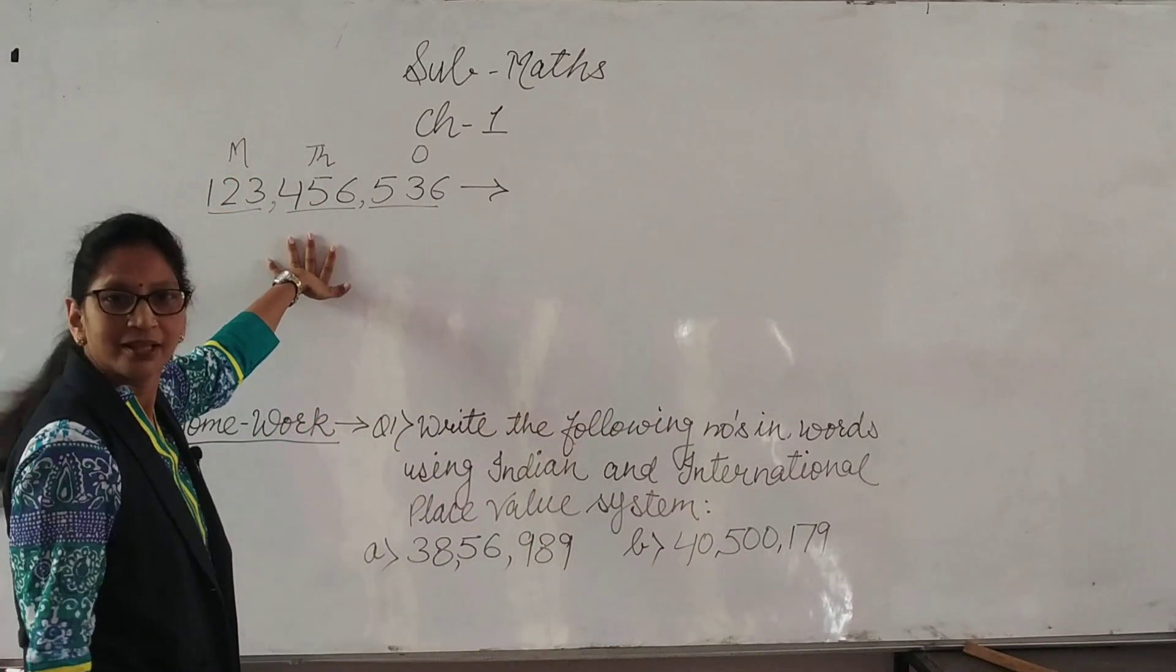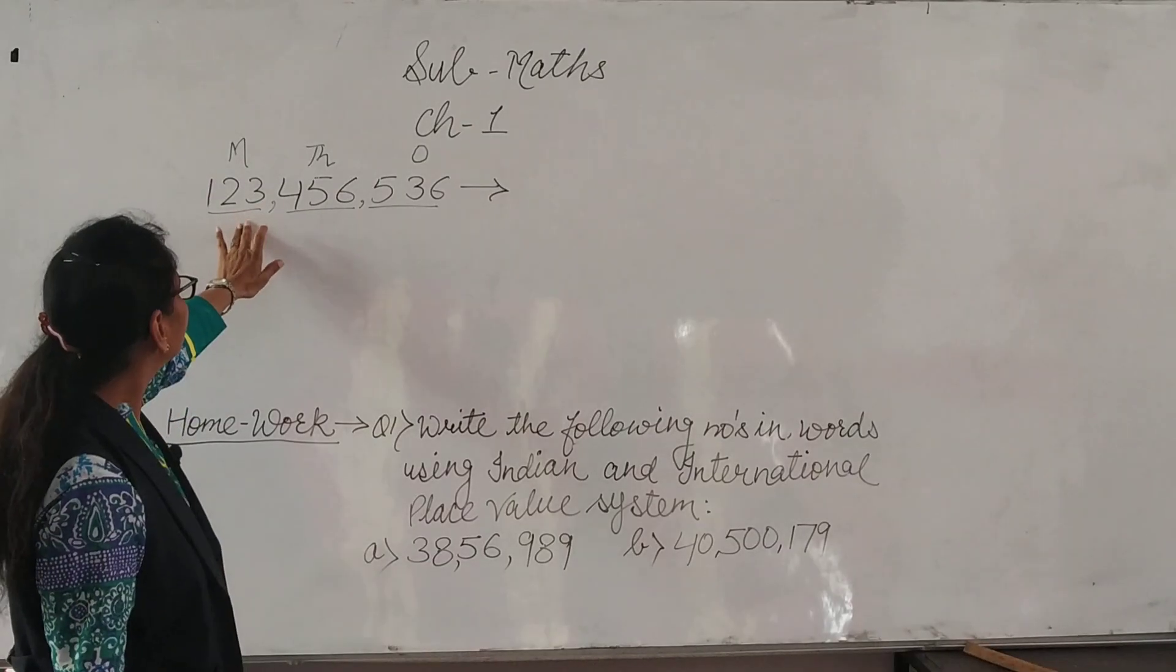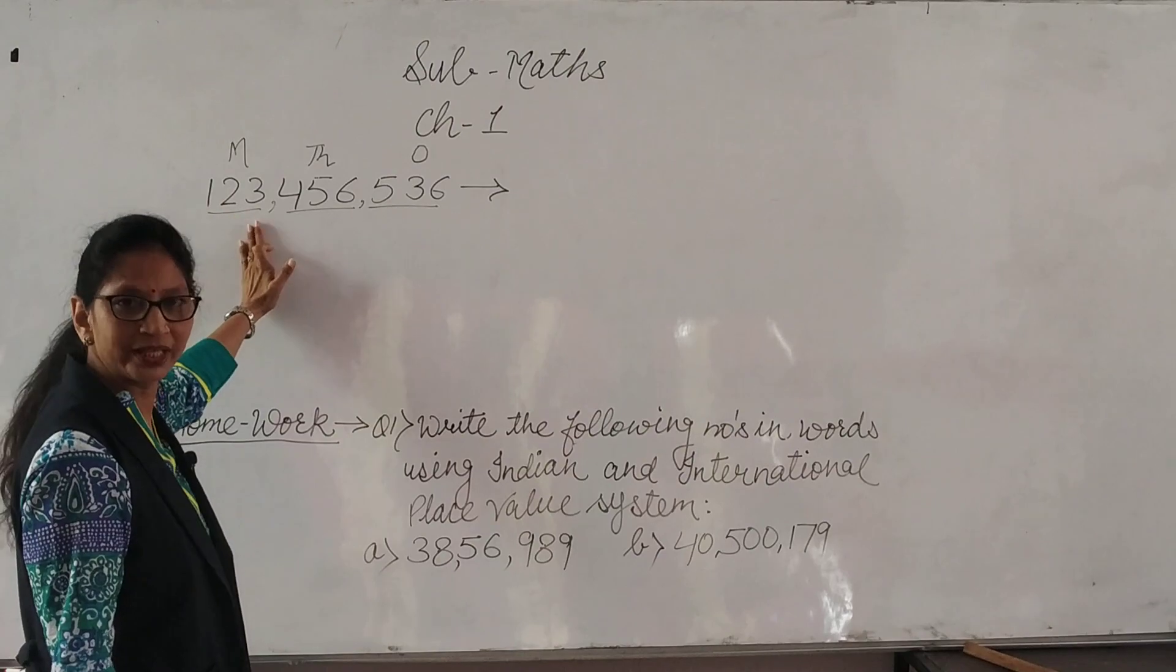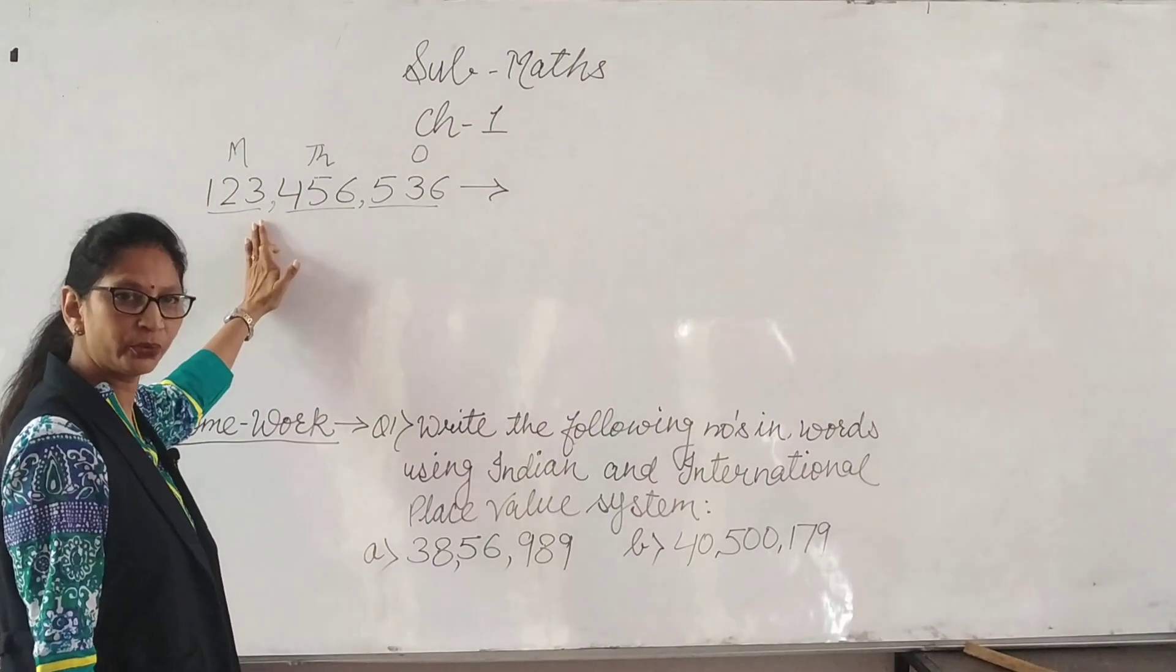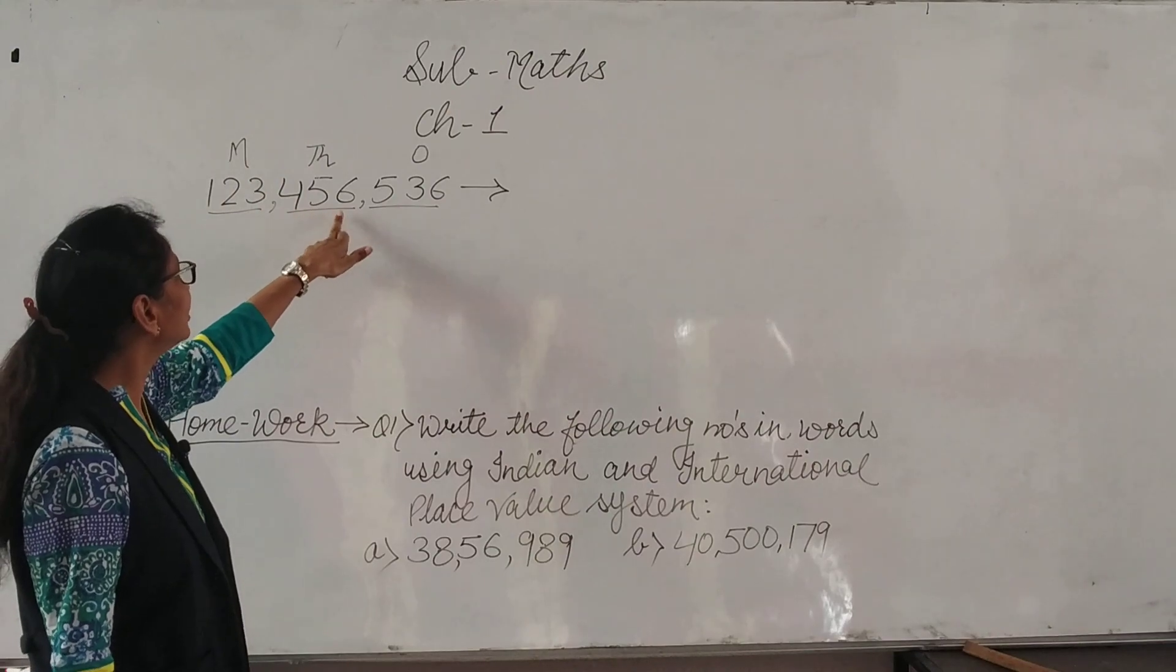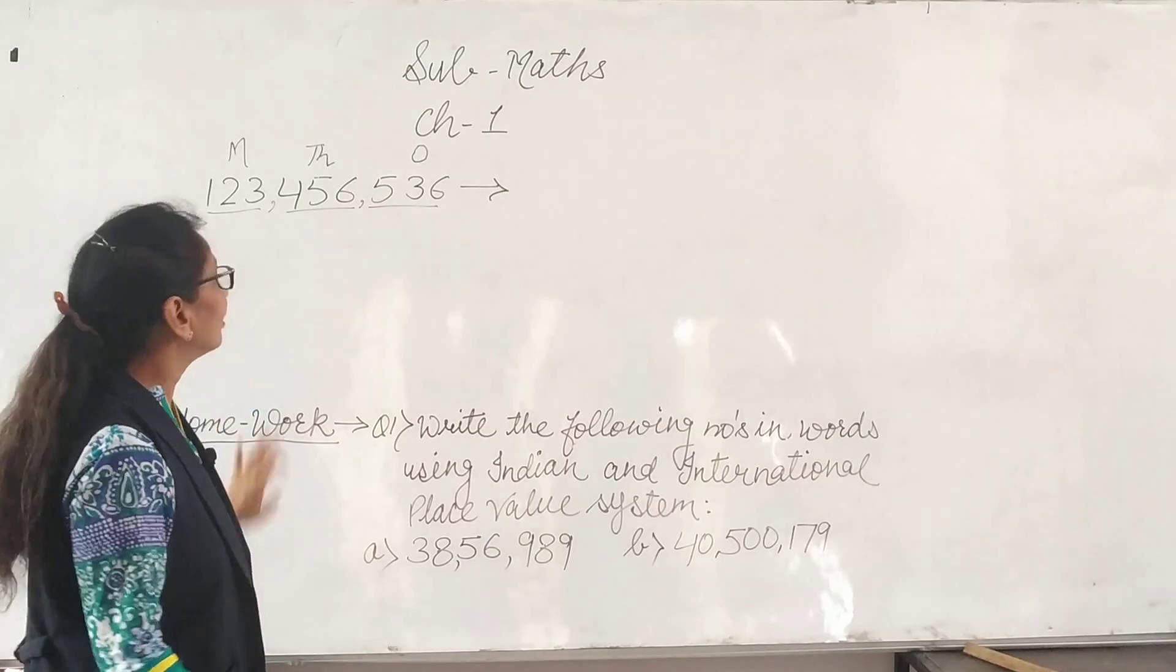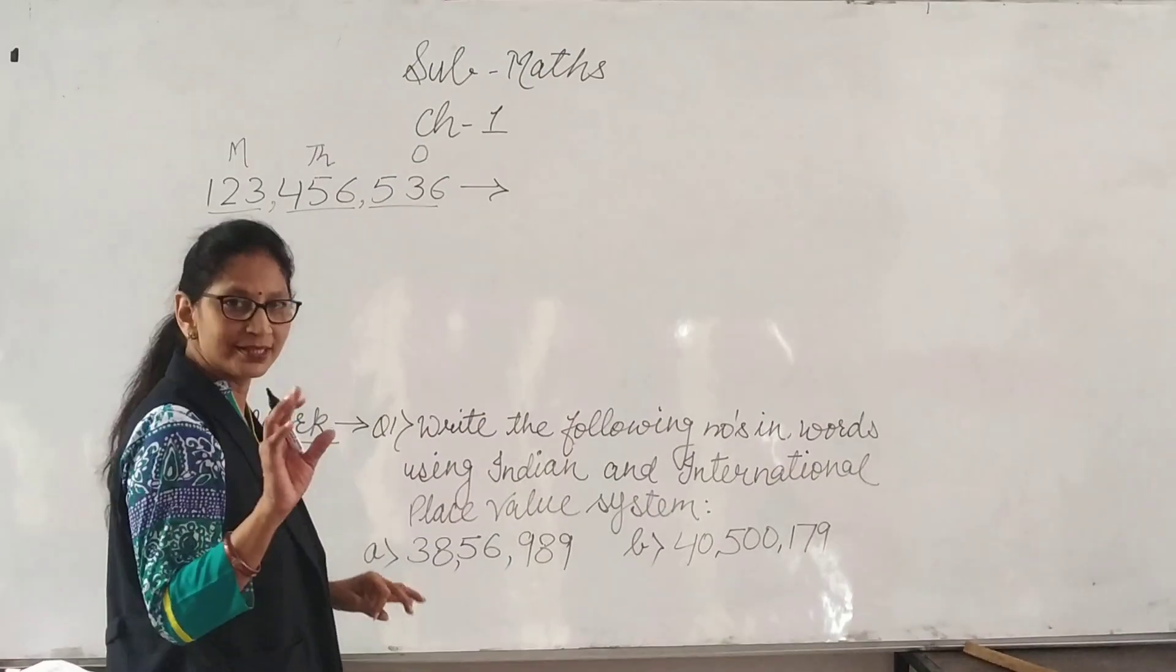You can see, we can do very easily. 1, 2, 3 means one hundred twenty-three million, four hundred fifty-six thousand, and five hundred thirty-six. Never write ones, okay?